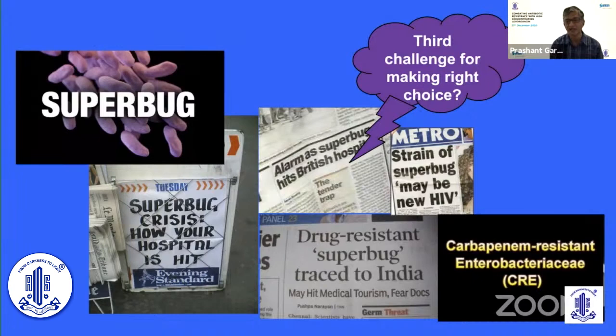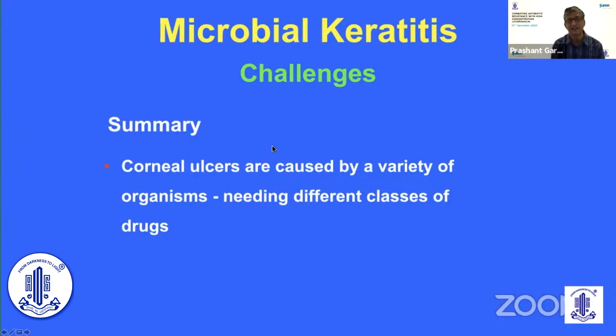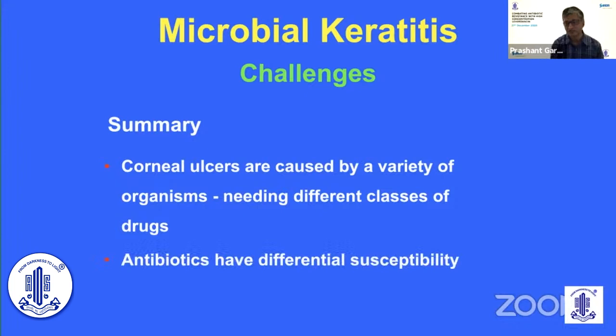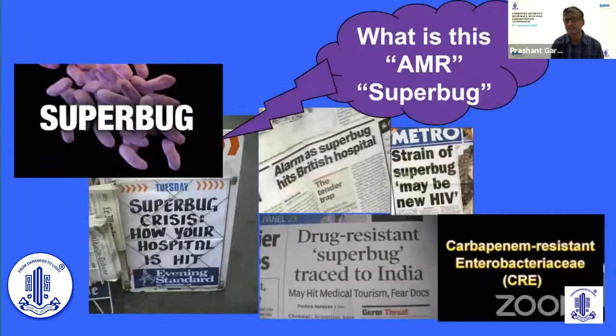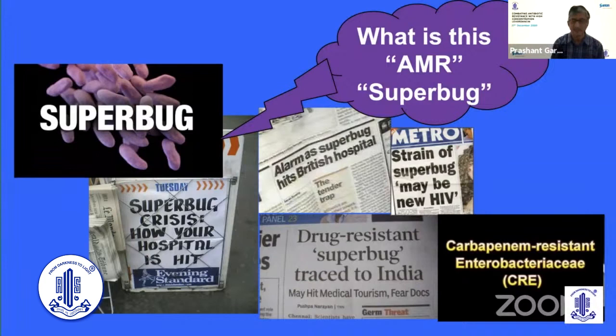What we are talking about is that despite identifying the organism, we still need to understand antibiotic susceptibility — and this is the third challenge in making the right treatment choice for corneal ulcer. To summarize, we discussed three challenges: first, corneal ulcers are caused by a variety of organisms needing different drug classes; second, antibiotics have differential susceptibility; and third, we are seeing a phenomenon of antimicrobial resistance — including superbugs, which are organisms resistant to multiple classes of antibiotics.